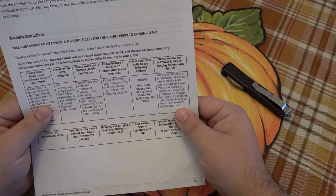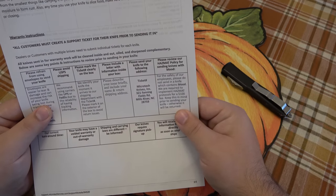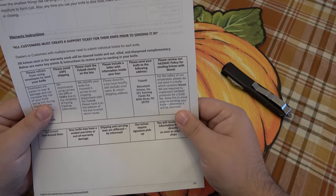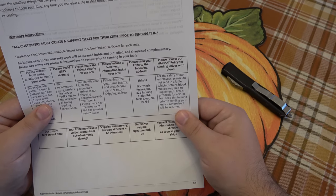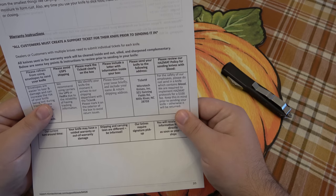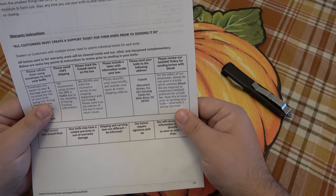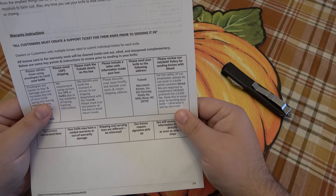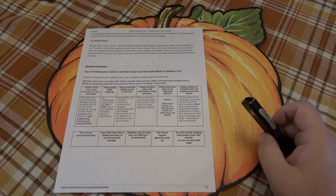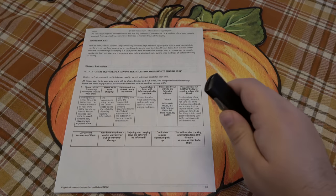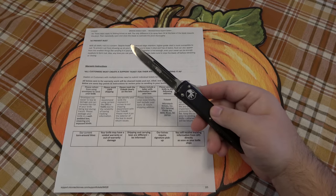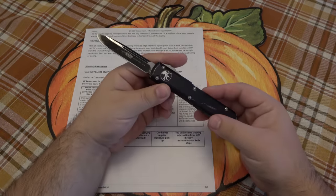And then, last one, it says, please review our hazmat policy for sending knives with blood. For the safety of our employees, please do not send in a knife which contains blood. We are required to implement hazmat protocols for a $100 fee. Keep this in mind prior to sending your knife. Otherwise, it will be returned. So let's stop there for a second and discuss this a little further because that sounds strange, right? Why would you have blood on your knife?